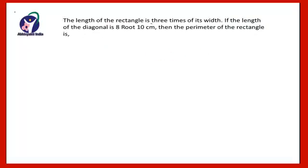The next question: the length of a rectangle is three times its width. If the length of the diagonal is 8√10 centimeters, then the perimeter of the rectangle is what? The relation between length and breadth is given, and the diagonal is 8√10 centimeters.